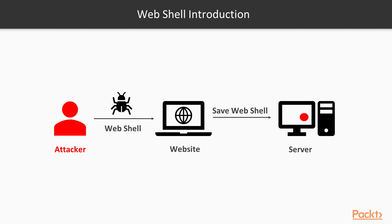Let's talk about the webshell introduction. In the figure, on the left-hand side there is an attacker. The attacker is trying to insert a webshell into the website, and with the help of that, it is going to store the webshell in the server — the webserver. So a webshell is a program, and with the help of that program an attacker can create a backdoor in the webserver. Without any username and password authentication, the attacker can directly grab information from the server or directly insert into the server. That can be done using a webshell.